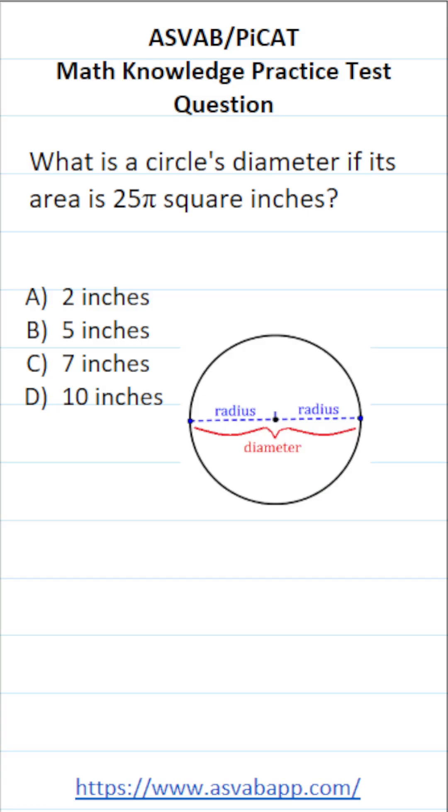In order to solve this one you first have to know how to find the area of a circle. Since you're not permitted to use a calculator or reference sheet on the actual ASVAB or PiCAT, you do have to commit this formula to memory.